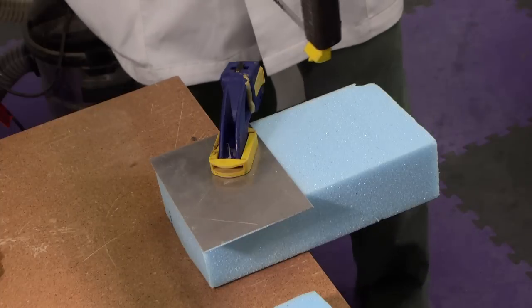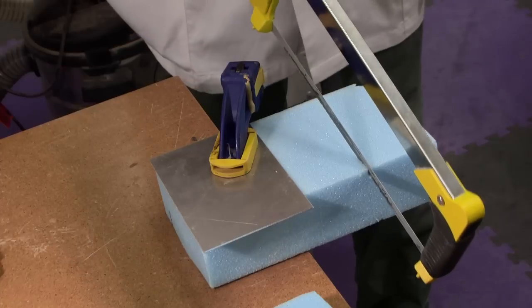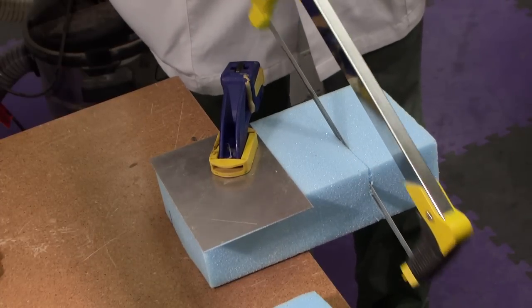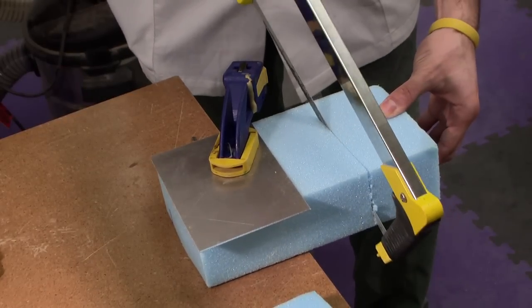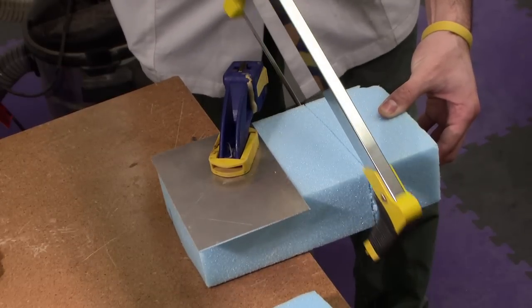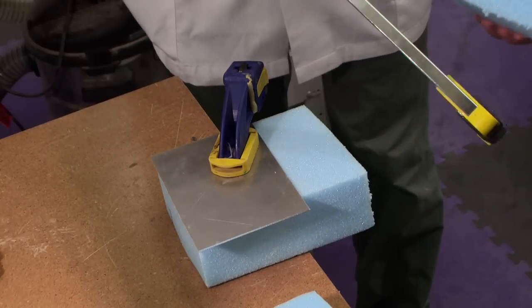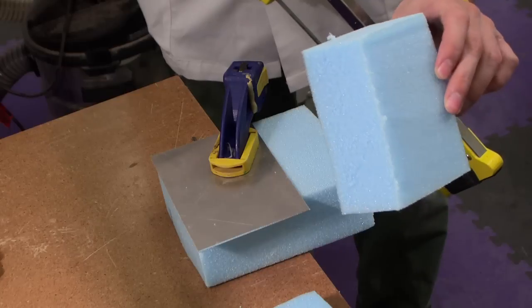So when you're ready to go ahead and use the hacksaw, you can just place it onto the foam, and then you can gently move the saw back and forth, making sure your hands and fingers are all out of the way. And then in no time, you'll have made a cut. Kind of a dusty cut, but a cut nonetheless.